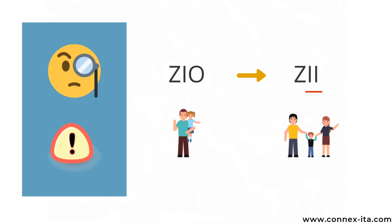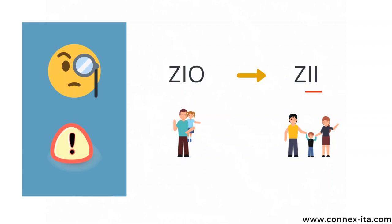Before we move on, watch out for this one. Zio, that's 'the uncle', in the plural is zii — with a double I, zii.